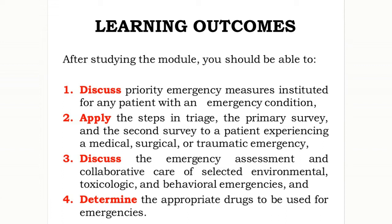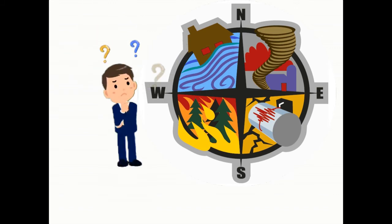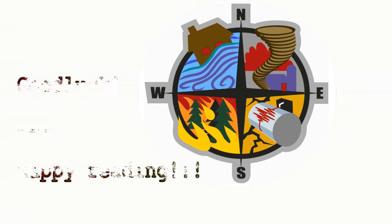After studying the module, you should be able to: one, discuss priority emergency measures instituted for any patient with an emergency condition; two, apply the steps in triage, the primary survey, and the secondary survey to a patient experiencing a medical, surgical, or traumatic emergency; three, discuss the emergency assessment and collaborative care of selected environmental, toxicologic, and behavioral emergencies; and four, determine the appropriate drugs to be used for emergencies.